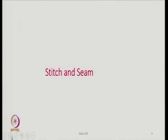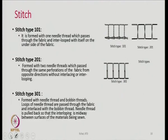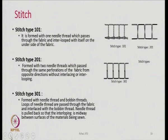Now we will go to stitch and seam, because it is also a very old technique. Stitching has been with us for a long time and is also a means to join fabric pieces to make a product. There are different types of stitches. Stitch type 101 is formed with one needle thread which passes through the fabric and interloops with itself on the other side of the fabric.